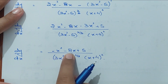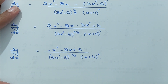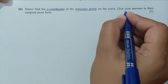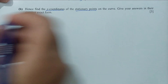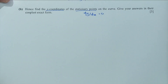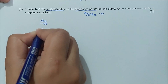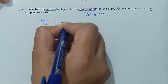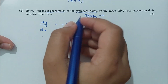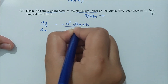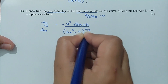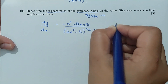A, B, C should be integers: a = −1, b = −8, and c = 5. These are integers. For part B, hence find the x-coordinates of the stationary points on the curve, giving answers in their simplest exact form. For a stationary point, we set dy/dx = 0. We have dy/dx equals (−x² − 8x + 5) over [(3x² − 5) to the power 2/3 times (x + 4) squared], and we set this equal to 0.